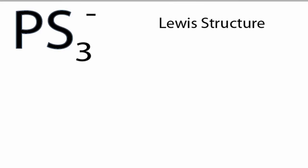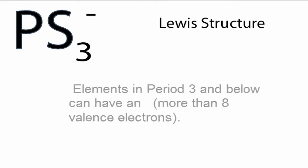For the PS3- Lewis structure, you'll want to think about a few things. First, phosphorus is in period three on the periodic table, so those elements in period three and below can have an expanded octet and can have more than eight valence electrons.